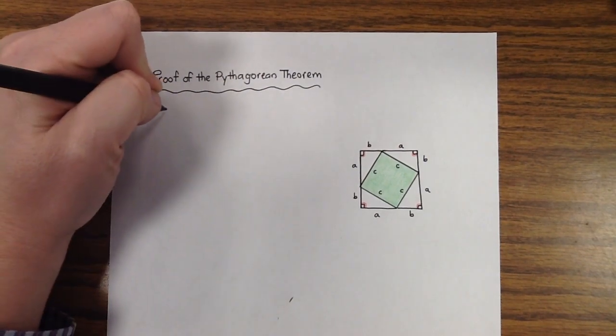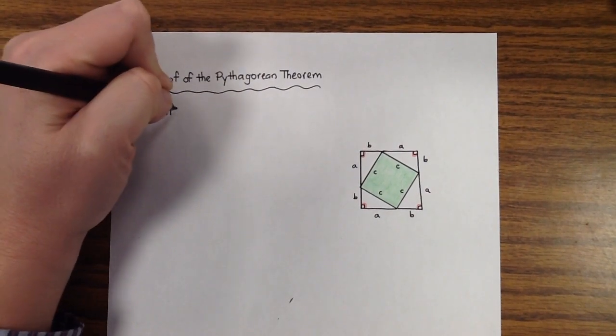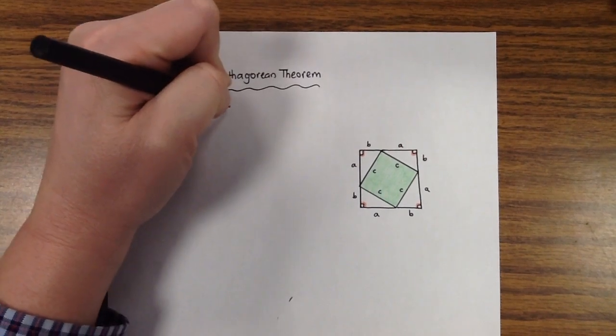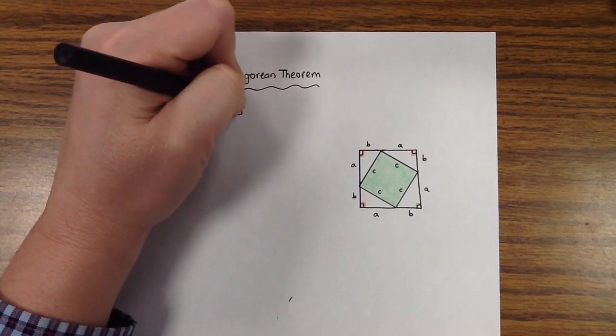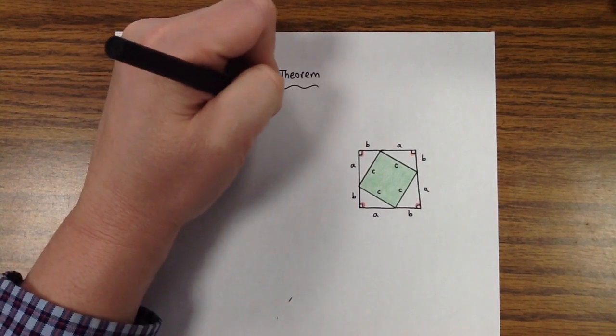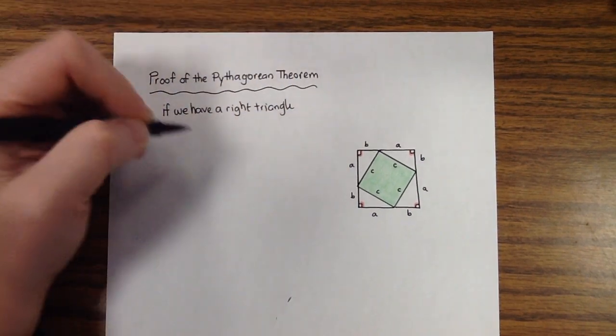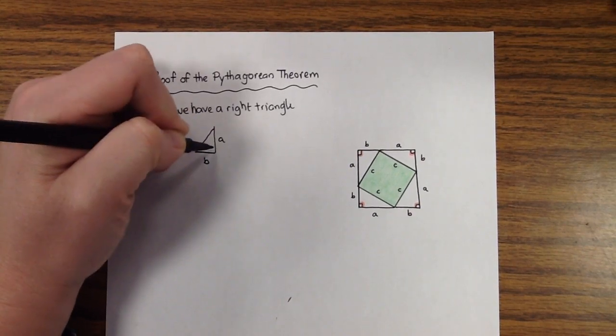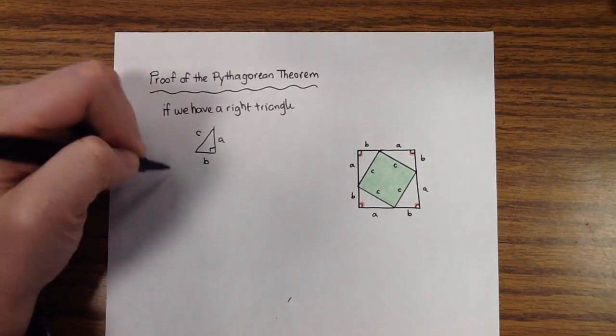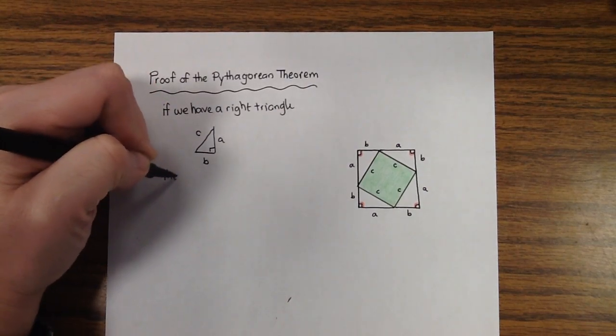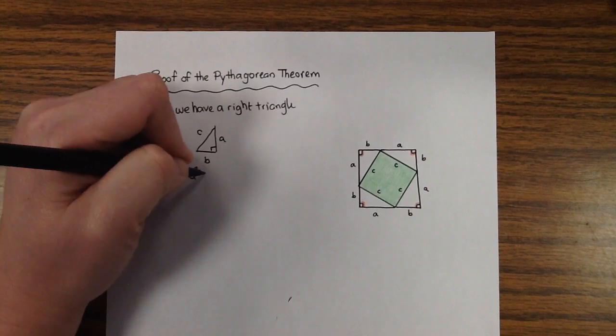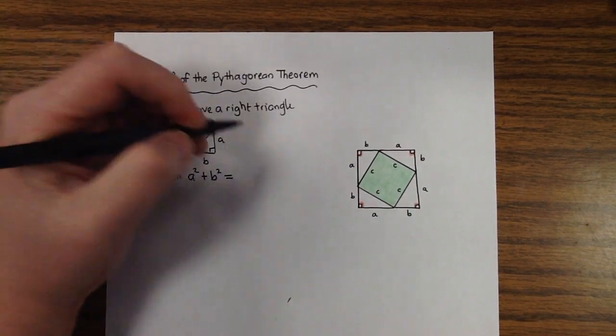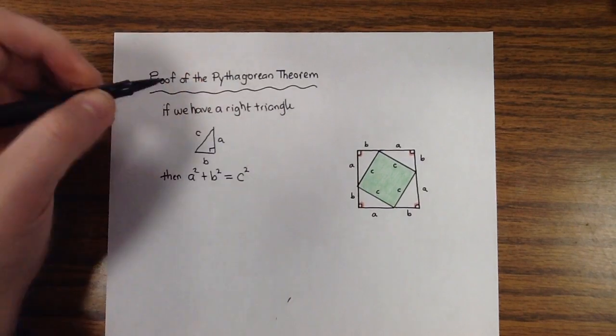Here's what we want to prove. We want to prove that if we have a right triangle, and if the legs are A and B, and if the hypotenuse is C, then we want to prove that A squared plus B squared must equal the square of the hypotenuse, C.